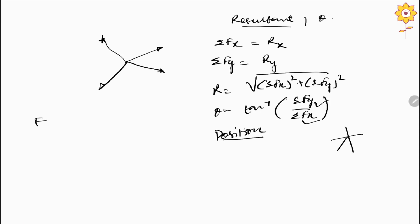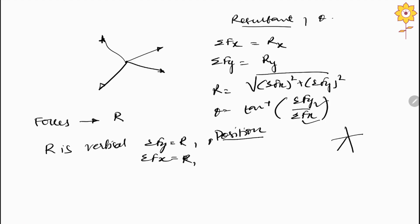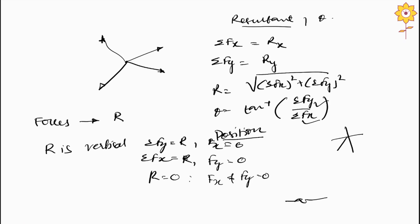R equals the square root of (ΣFx)² + (ΣFy)², and theta equals tan⁻¹(ΣFy / ΣFx). Three special conditions were covered: if R is vertical then ΣFx = 0; if R is horizontal then ΣFy = 0; if R = 0 then both ΣFx and ΣFy equal 0. I hope you enjoyed this series. Next lecture we start with resultant of parallel force system. Thank you.